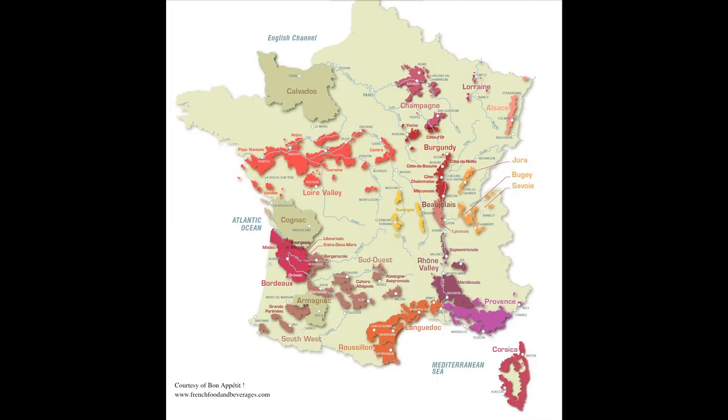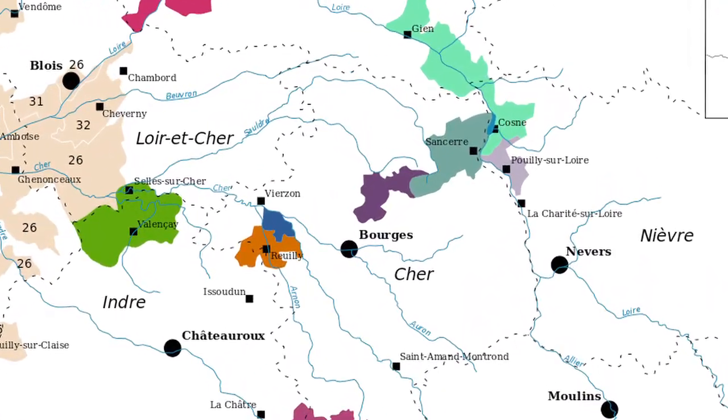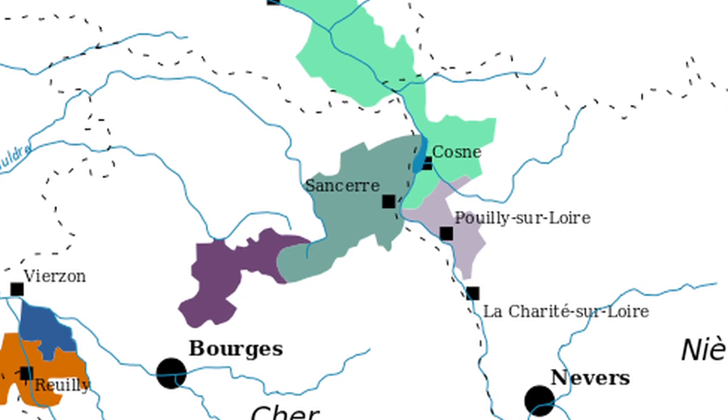Sauvignon Blanc is world famous from the Loire Valley — specifically Pouilly-Fumé, up in the mountains at the very end of the Loire Valley, which is 100% Sauvignon Blanc. Right across the river is Sancerre, which is one of my favorite Sauvignon Blancs. Sauvignon Blancs are also great in California, South America, and Australia. New Zealand has been world famous for their Sauvignon Blancs, which are way more aggressive, way more cat pee, and way more cut grass compared to their Pouilly-Fumé counterparts.